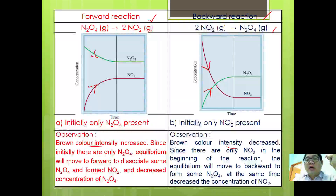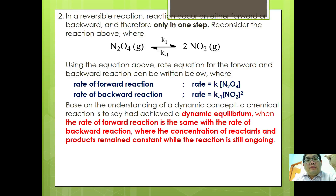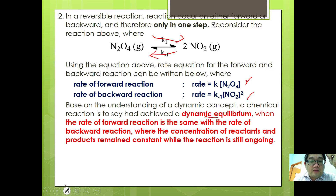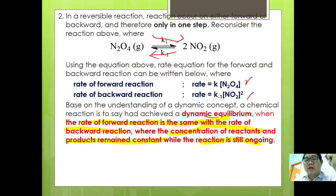Eventually, concentrations will remain constant at a certain point in time. In reversible reactions, reactions occur in either a forward or backward direction. Using the equation N2O4 ⇌ 2NO2, the rate equation for the forward reaction is: rate = K[N2O4], and for the backward reaction: rate = K₋₁[NO2]². A chemical reaction is said to have achieved dynamic equilibrium when the rate of forward and backward reaction is the same, and concentrations of reactant and product remain constant while the reaction is still ongoing.